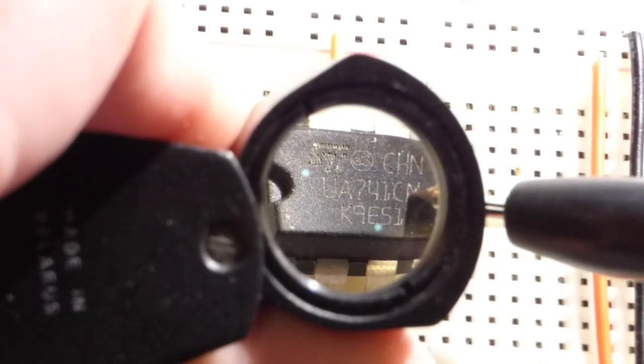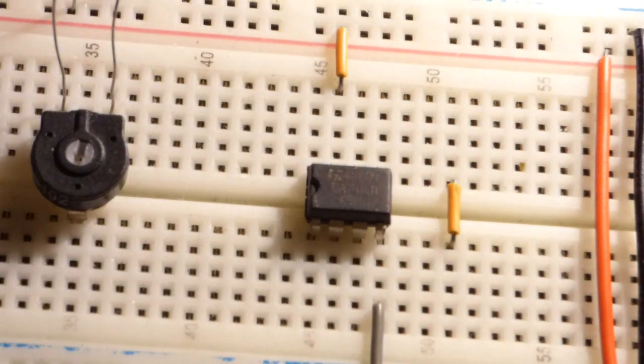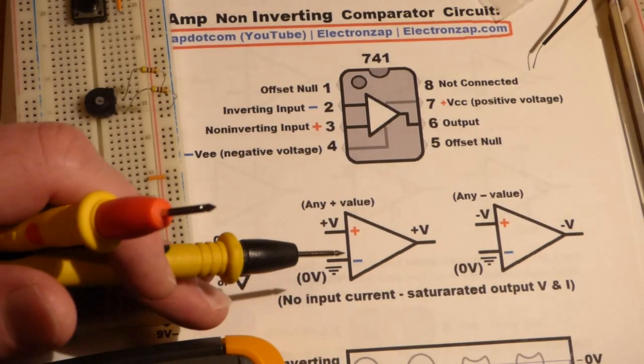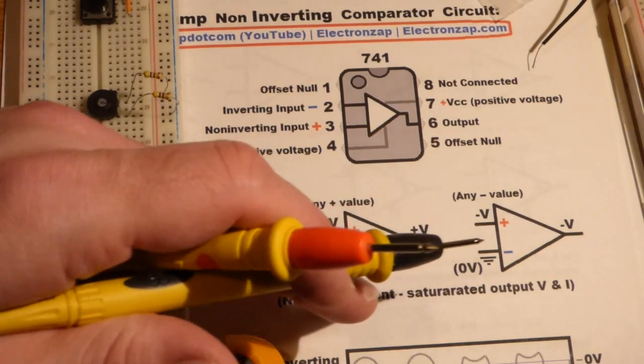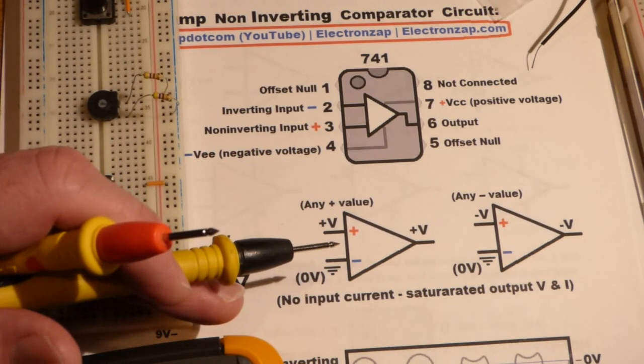There's also some letters on both sides that's not important in this video. Any 741 op-amp should work just fine with this circuit. Now let's start looking at just a basic schematic diagram that tells you how this circuit works.